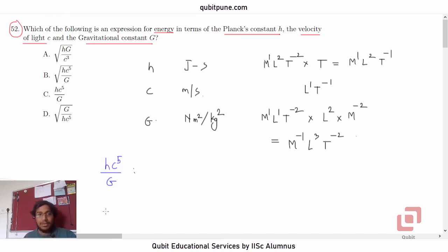And let us try to calculate the dimensions. h is m1 l2 t negative 1, into c raised to 5, l raised to 5, t raised to negative 5, upon G, m negative 1, l cubed, t raised to negative 2. Let us simplify this, m squared.